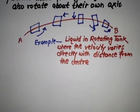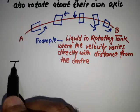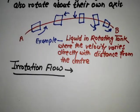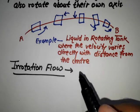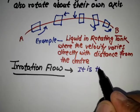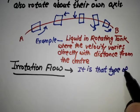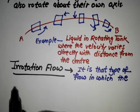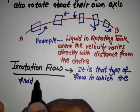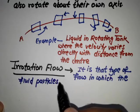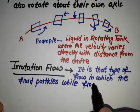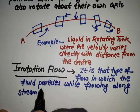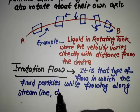So now next is irrotational flow. What is the irrotational flow? It is that type of flow in which the fluid particles while flowing along streamline do not rotate.